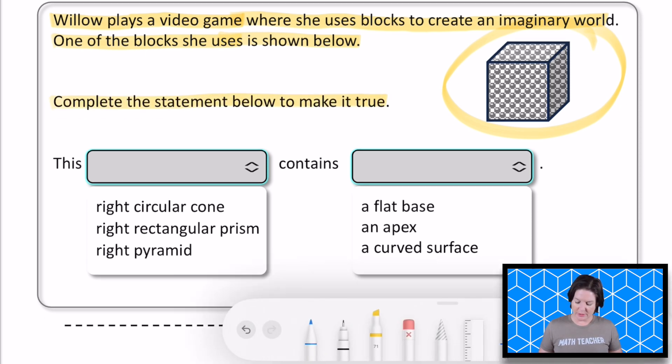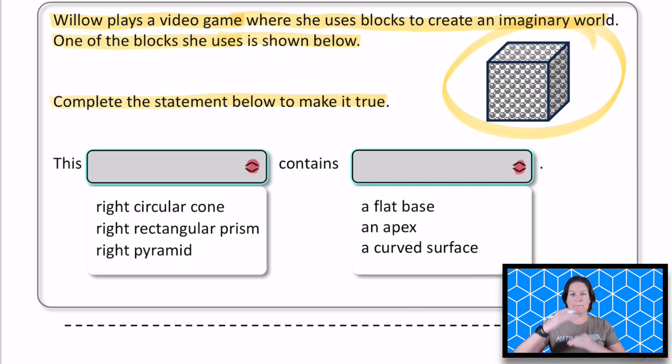Okay, so these are our little drop down menus right here for editing tasks. When we drop them down, that menu drops down and we can see our answer choices. So it says this blank contains blank. Let's go through it.